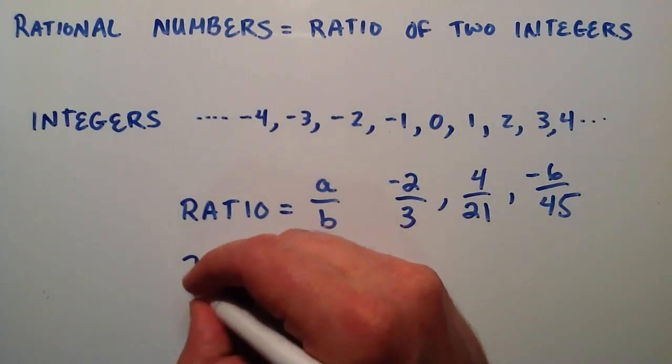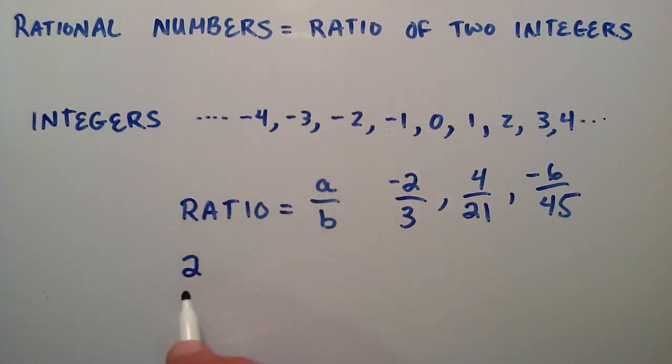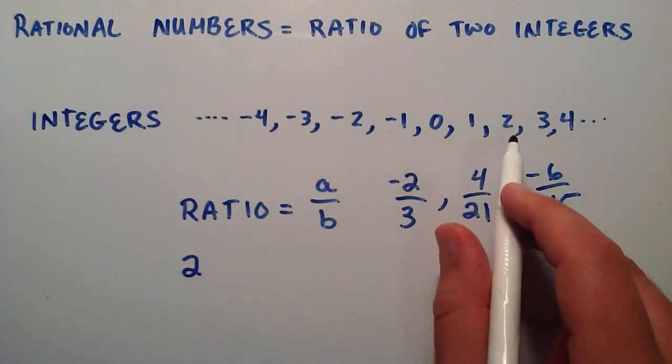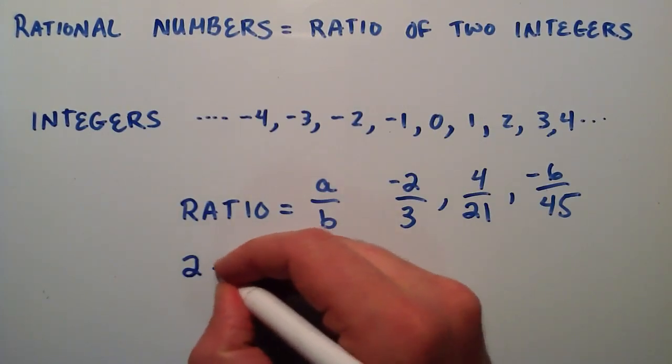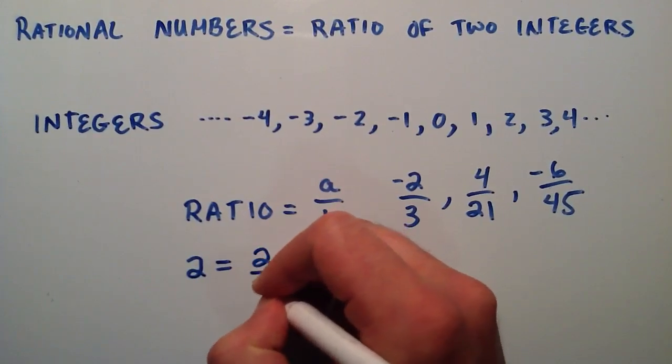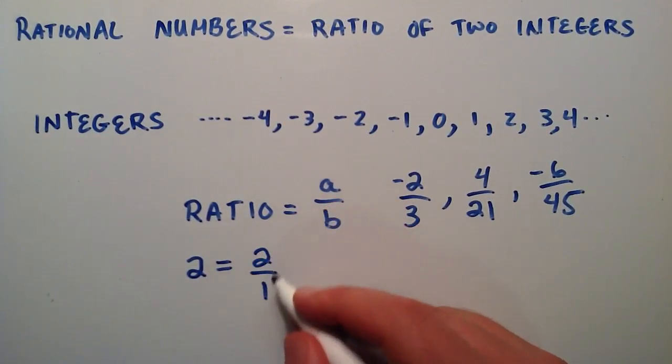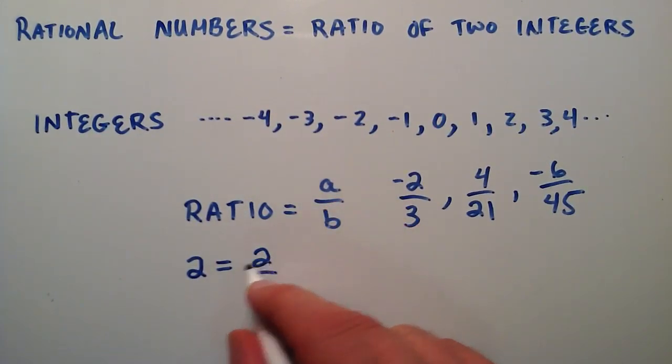Let's just look at the plain old number two. Is two a rational number? We know it's an integer, but what's another way that we could write this? We could say two is equal to two divided by one, because any number divided by the number one is simply itself. So two can be written as a ratio of two integers. Two is an integer, one is an integer, and this is a ratio of two integers.